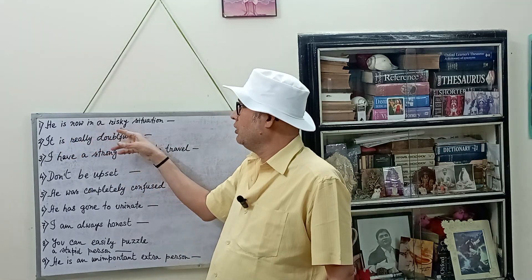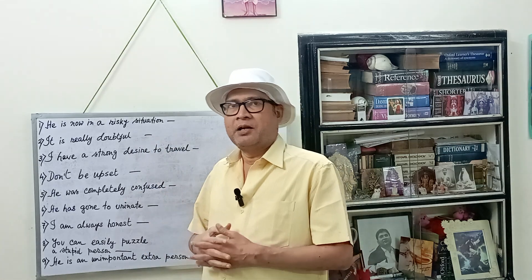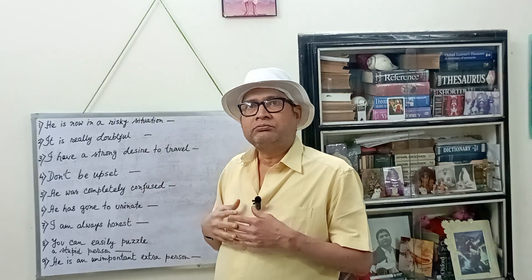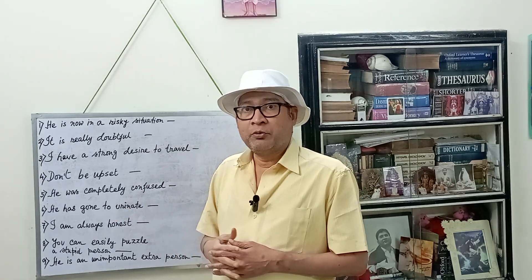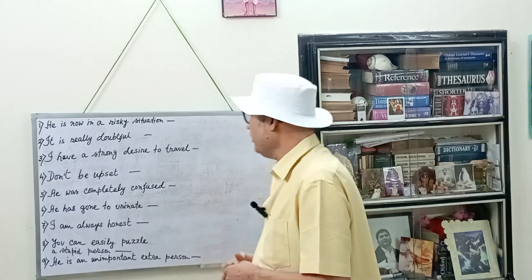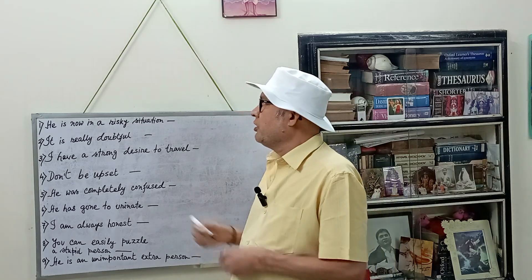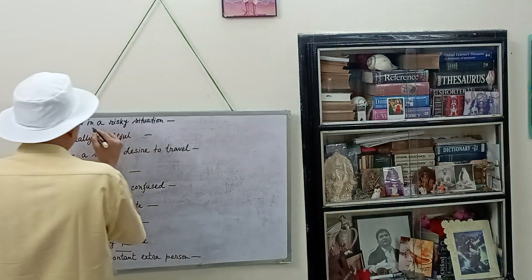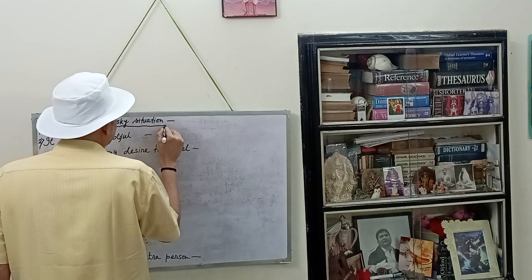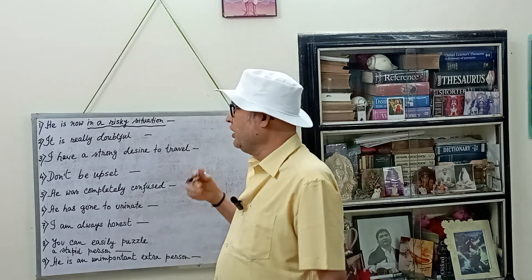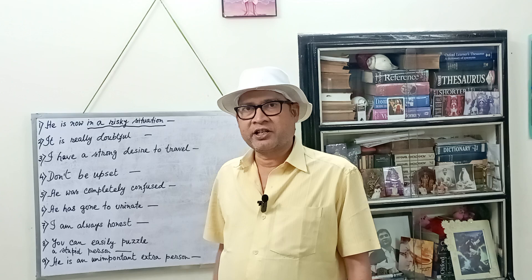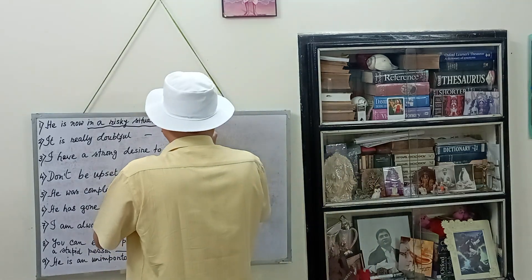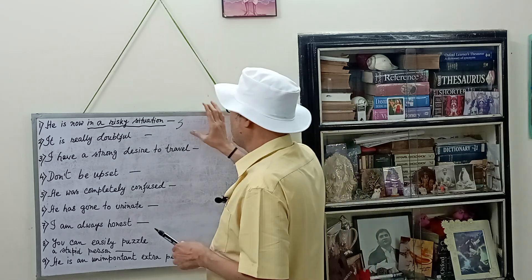When you are speaking to the dignitaries, when you are speaking to the elderly members of your family, you are supposed to use this type of English. Now I'm going to recast this sentence into very informal English, which you use when you are in a conversation with your friends. So what is that informal sentence? He is now — this much is okay, I'm not going to bring about any change there — so I'm going to change only 'in a risky situation.' In spoken English, you may say he is now skating on thin ice.